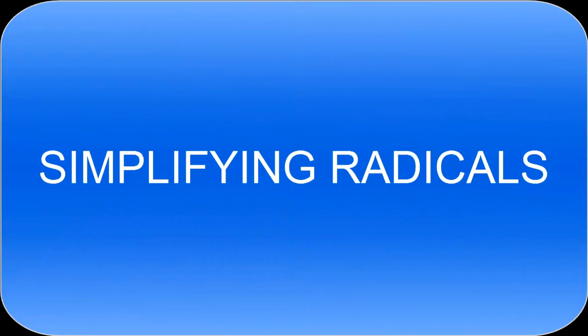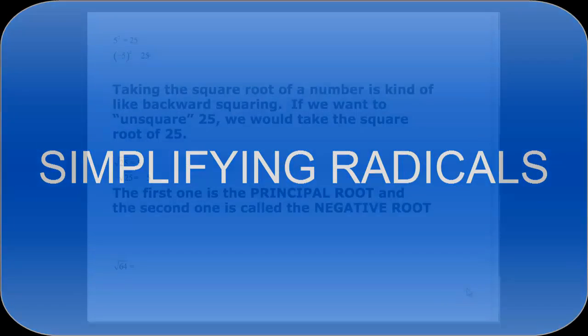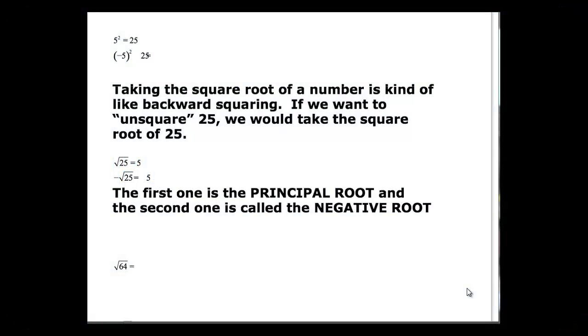This video will talk about simplifying radicals. When we simplify radicals, you kind of first have to think about squaring. So if we have 5 squared, that's equal to 25. And if we have negative 5 squared, that's supposed to be equal to 25 as well.